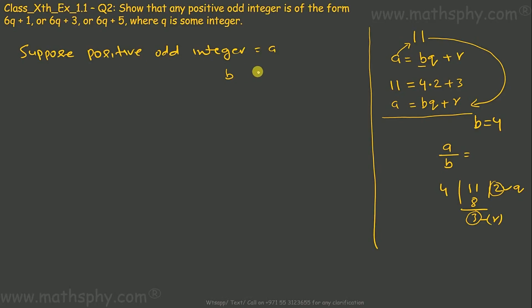In that case, b would be... I have to show positive odd integer in the form of 6q+1, 6q+3, 6q+5. So all these 6's here, they are b. So b would be 6. Now what would be r? r is the remainder. We know that when we divide any number, here I took 11 divided by 4...